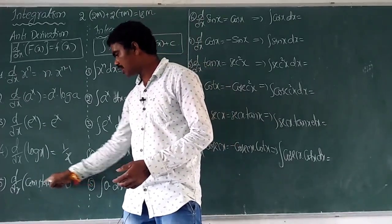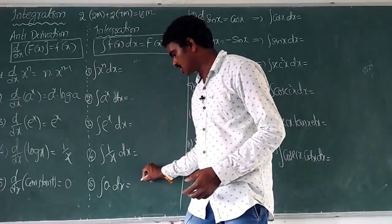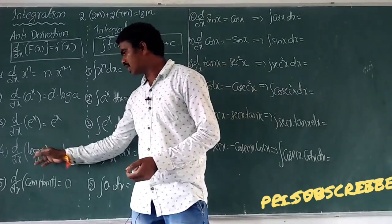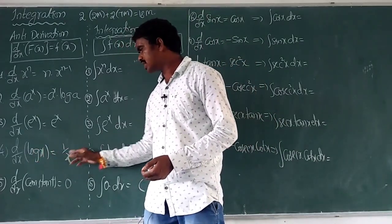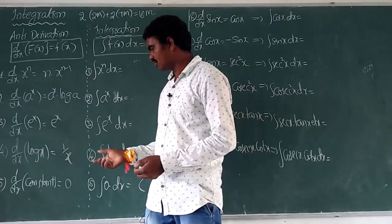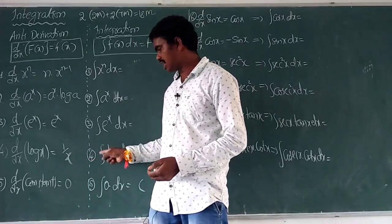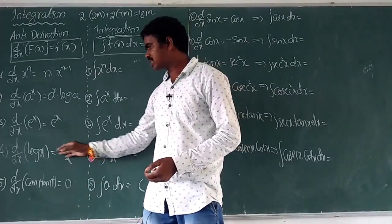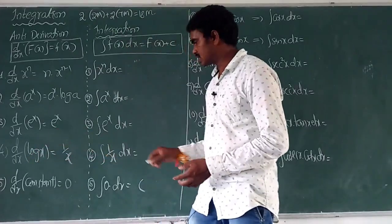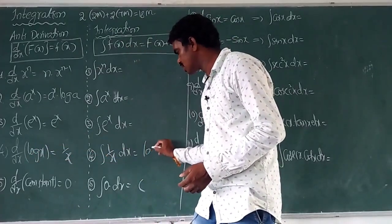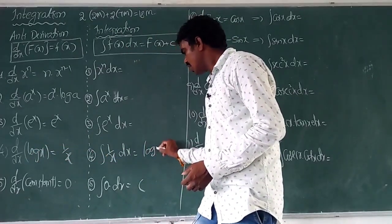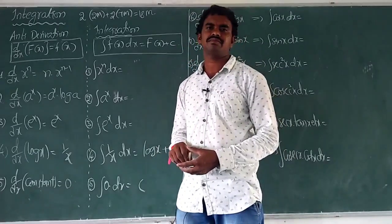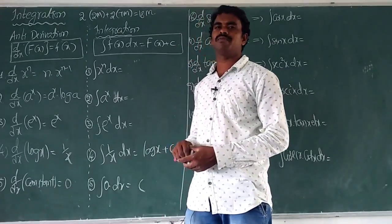The integration of a term is the reverse of derivation. So integration of 0 becomes a constant. Derivation of log(x) is 1/x, so integration of 1/x becomes log(x). This is the integration symbol. Integration of 1/x is log(x). In integration, we should additionally write plus c. I mention this in every formula.